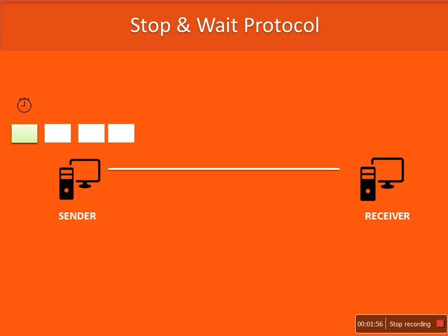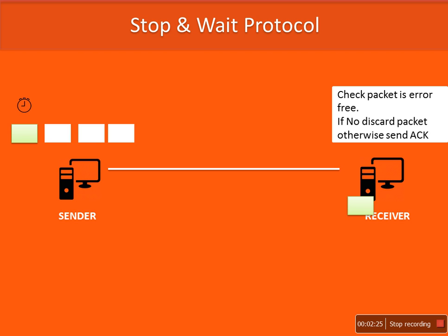In the case of a lost acknowledgement, the sender attaches a timer for every packet. Whenever a packet is sent, a timer starts counting, and that timer has a particular value. If an acknowledgement for that packet is received within that duration, it's okay. Otherwise, if the timer expires, the packet will be sent again. So this is the situation: a packet is sent to the receiver and the timer starts counting.